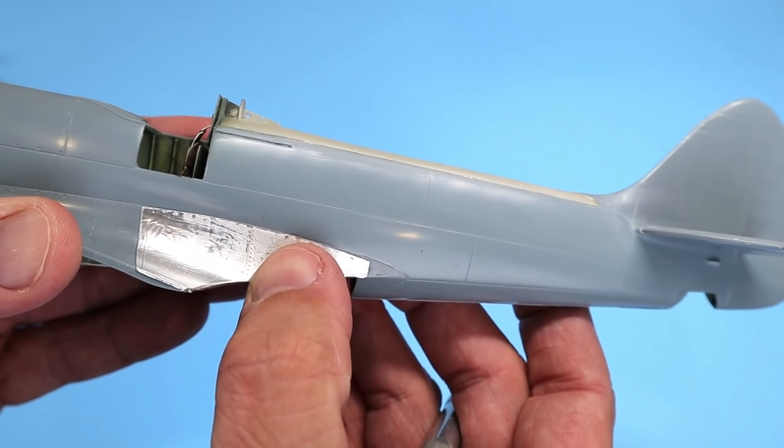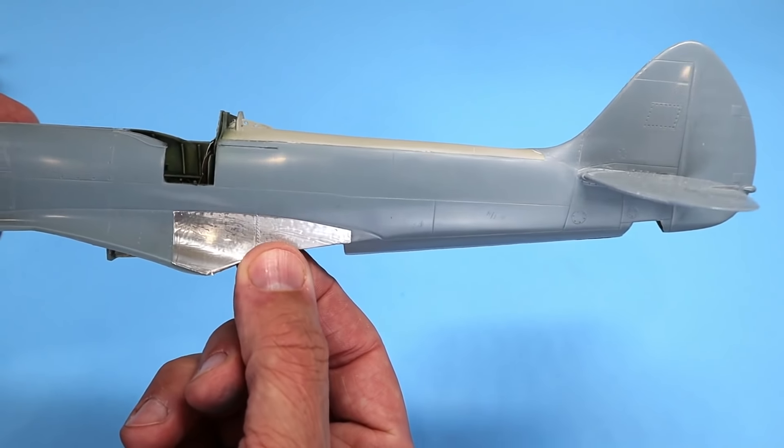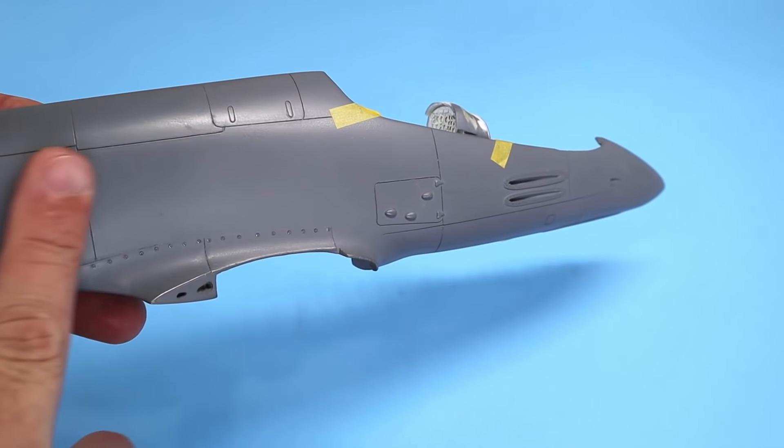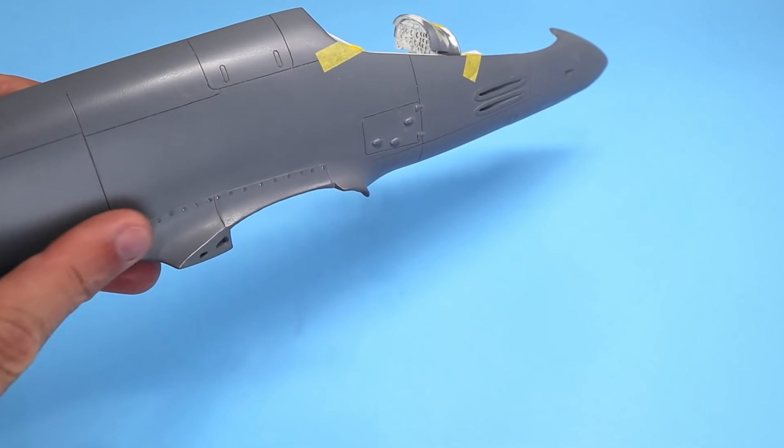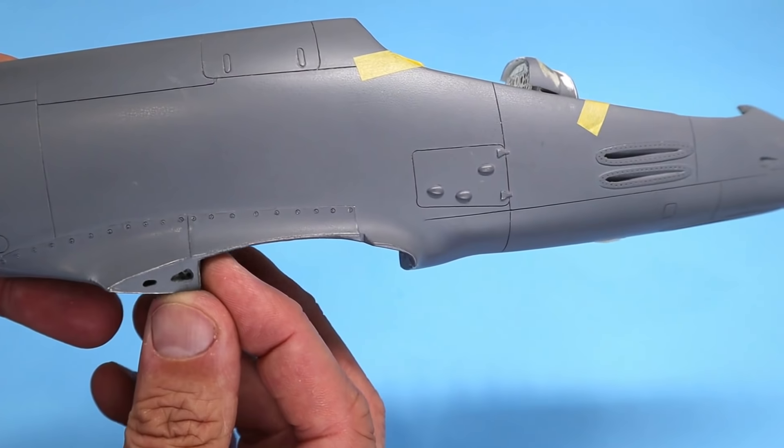And when you've got the desired skin effects that you want, you can just come back in and airbrush or spray a coat of primer over the detail, and it'll look something like this.